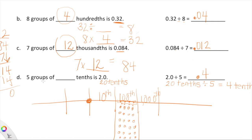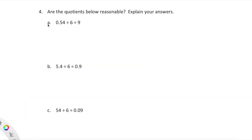Let's connect that to the left side: 5 groups of blank tenths is 2, or 20 tenths. Five groups of 4 tenths is 20 tenths. You can see how multiplication and division are so closely related — very cool. What we're really doing is exploring that relationship: thinking about what it means to make copies of something, what it means to divide something evenly, and we can do that in a very visual way.